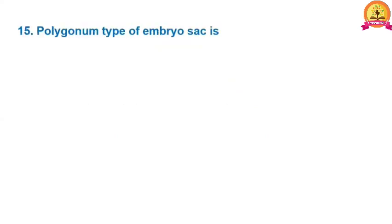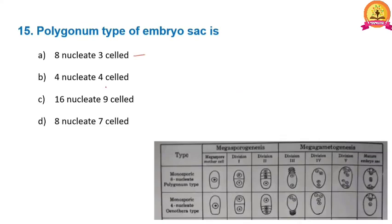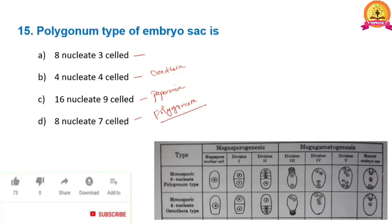Next: the Polygonum type of embryo sac. A 4-nucleate 3-celled embryo sac is called the Plumbagella type. A 4-nucleate 4-celled embryo sac is the Oenothera type. A 6-nucleate 9-celled embryo sac is the Peperomia type. An 8-nucleate 7-celled embryo sac is called the Polygonum type, because it was first studied in the Polygonum plant by Strasburger. Therefore, the 8-nucleate 7-celled embryo sac is the Polygonum type of embryo sac. Thank you.